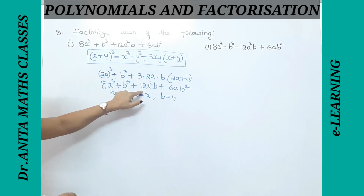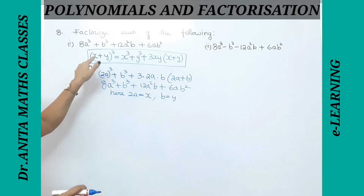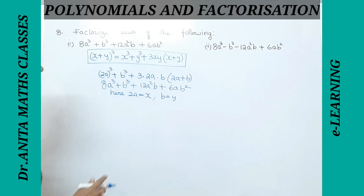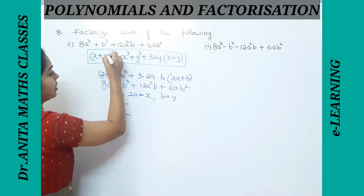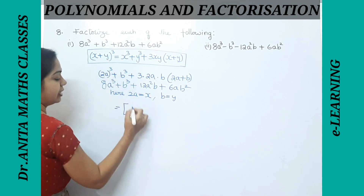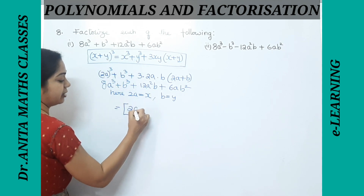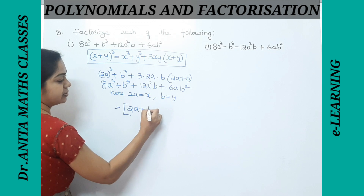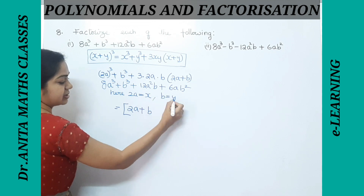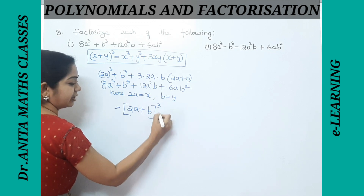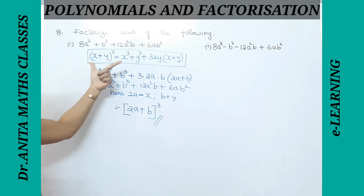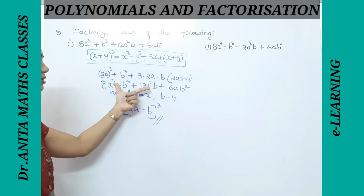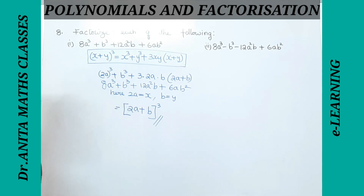This RHS part matches, so the LHS gives us our final answer. With x = 2a and y = b, the factorized form is (2a + b)³. We've brought the expression into this form and identified the factor.